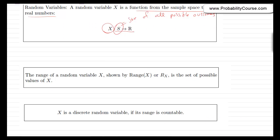We define the range of a random variable x, shown as range(x) or R_x, as the set of all possible values of x. We defined discrete random variables: a random variable x is discrete if its range is a countable set, meaning you can list all elements in the range — x1, x2, and so on.